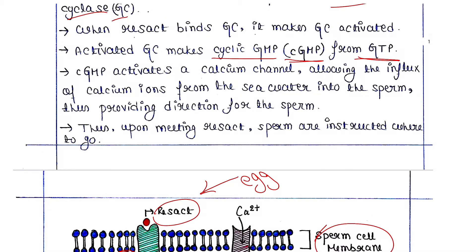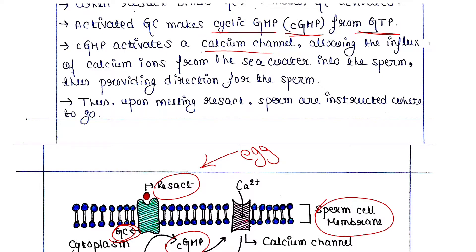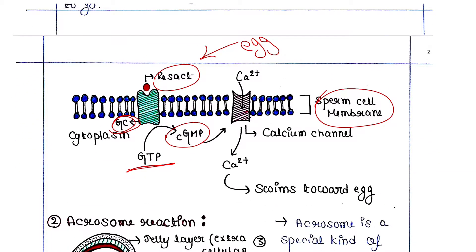cGMP activates a calcium channel, allowing the influx of calcium ions from the sea water into the sperm, thus providing direction for the sperm. Upon meeting resact, sperm are instructed where to go. When cGMP is produced, it activates the calcium channel, and this channel allows the influx of calcium from sea water into the cytosol. The increased amount of calcium shows the direction toward the egg.